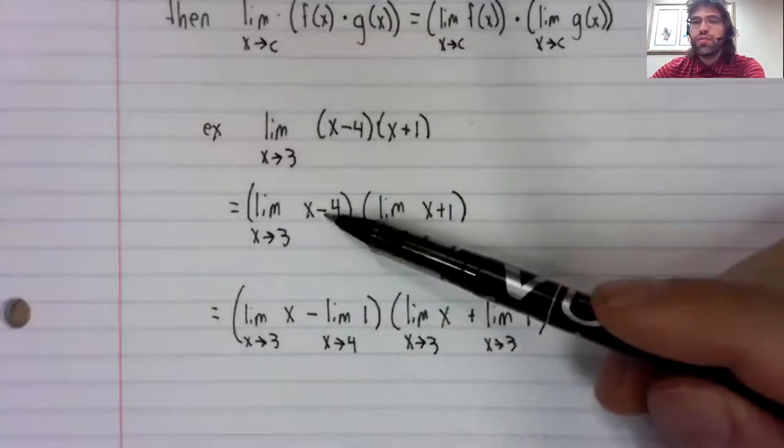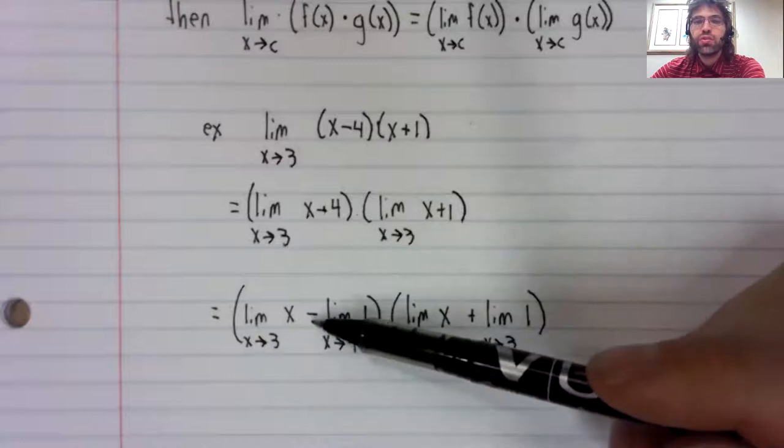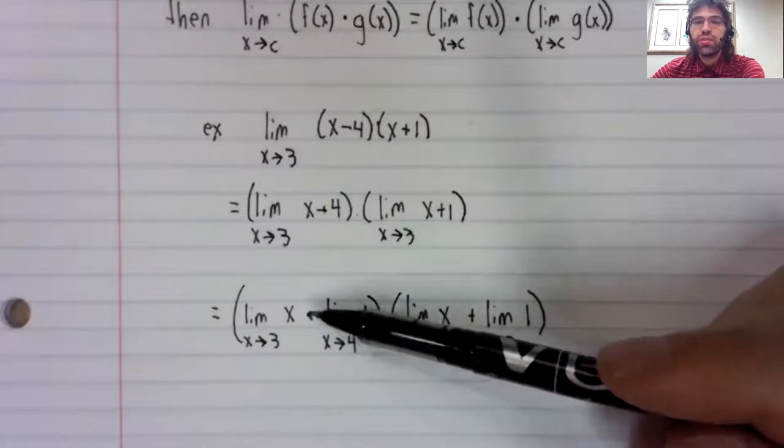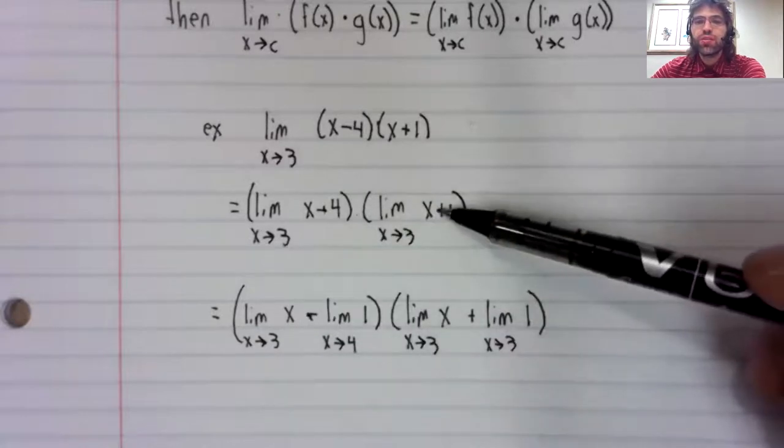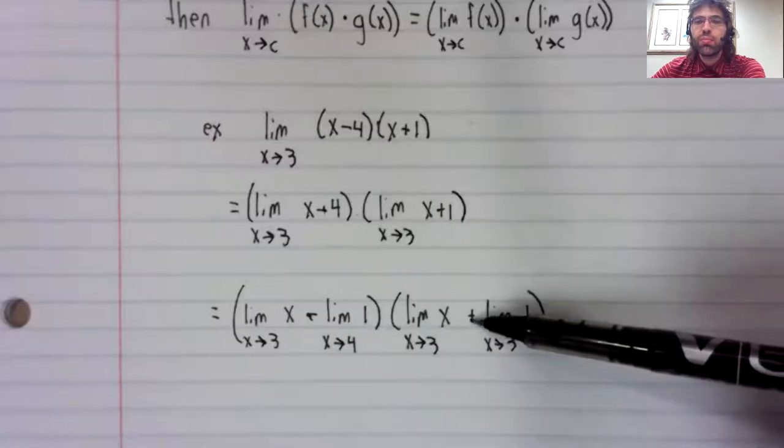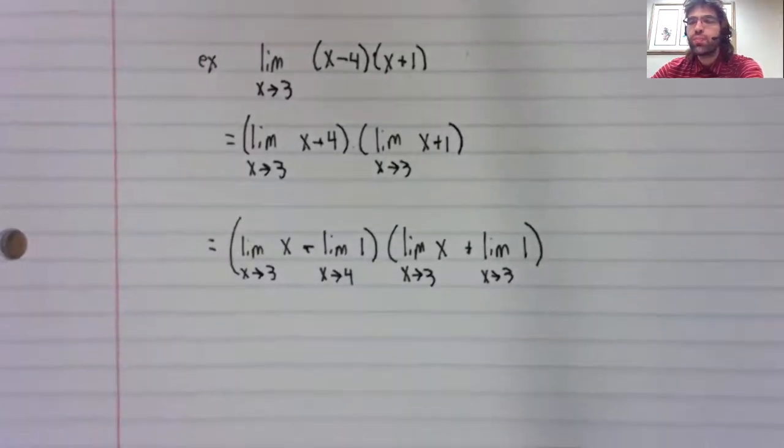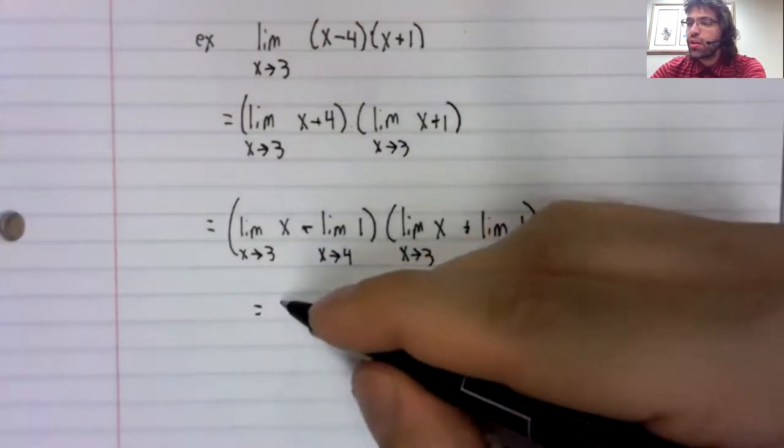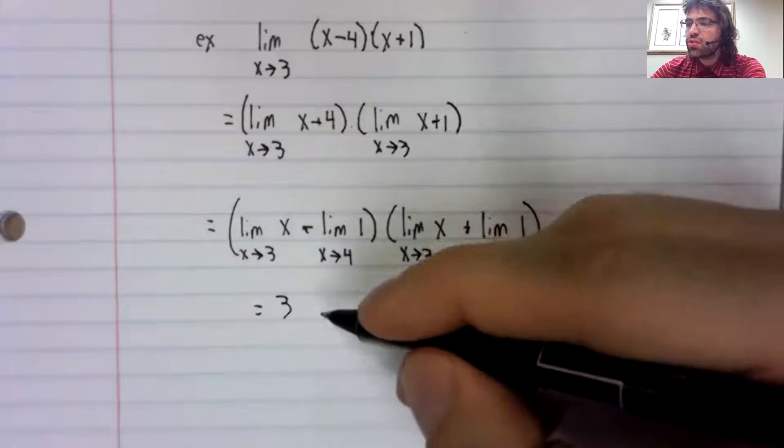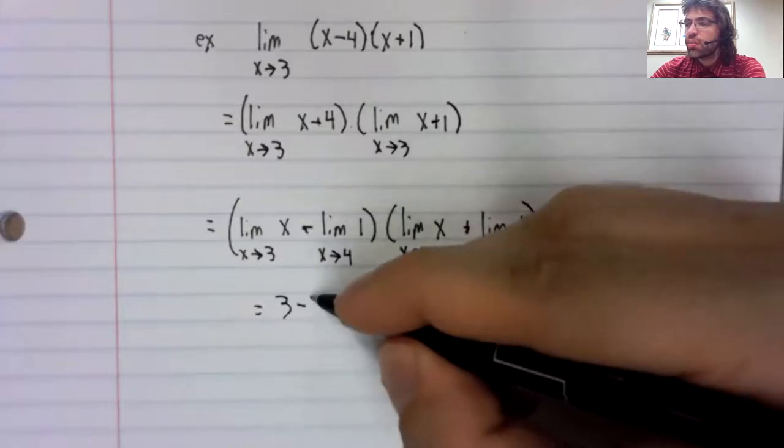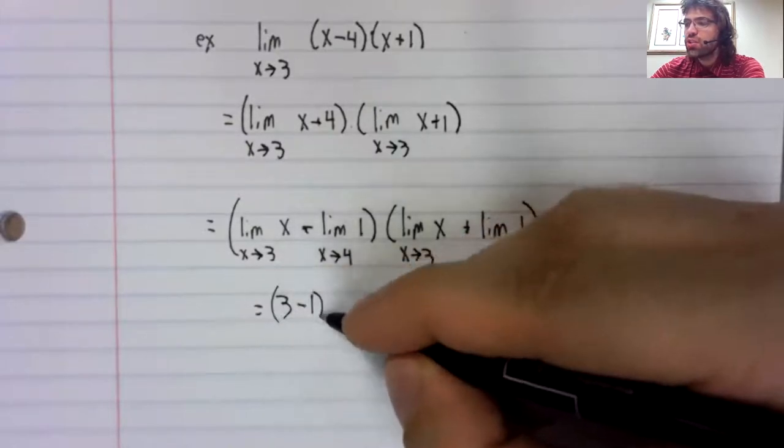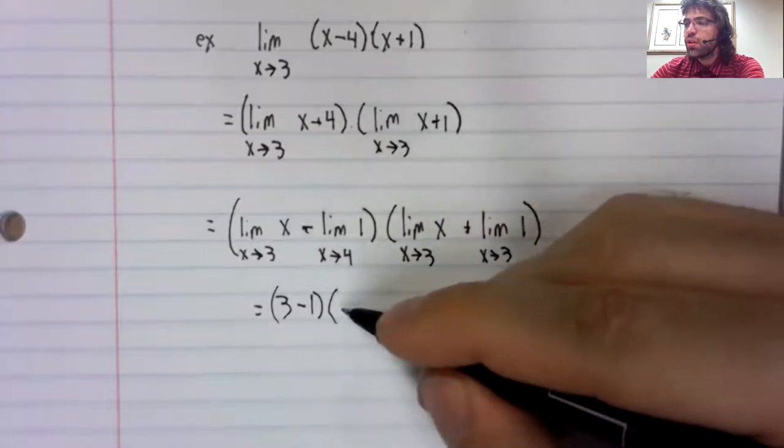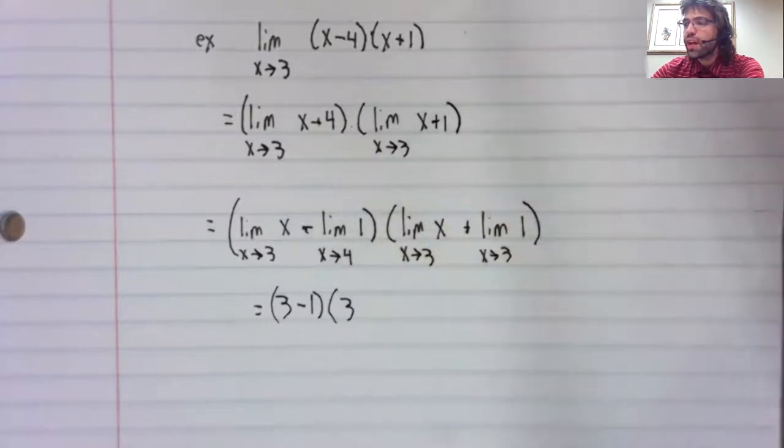This limit of the difference becomes the difference of limits. This limit of a sum becomes the sum of limits. And each of these limits we can find. The limit of x, the limit of a constant, the limit of x.